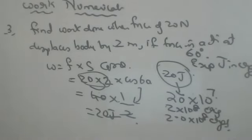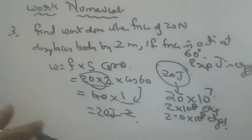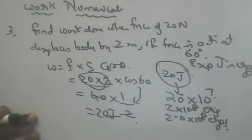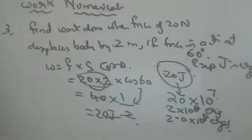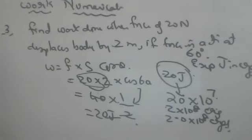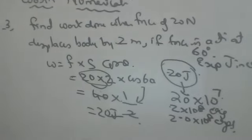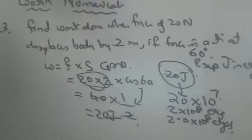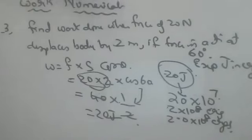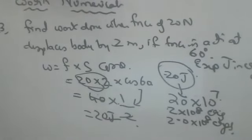So the first sum I told without angle, second sum I told with angle, third sum I told with angle — third sum was conversion of joules into ergs. Now, next one.